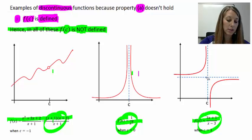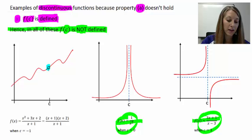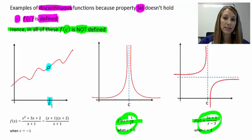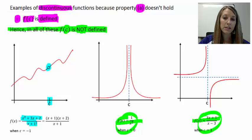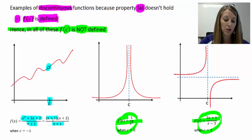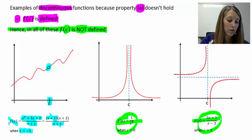In the first example, my function is not defined at c, which creates a hole in the graph at c. An example of this is a rational function where, if we factor the numerator, one factor in the numerator cancels with one factor in the denominator, creating a hole in the graph at negative one for that specific function.